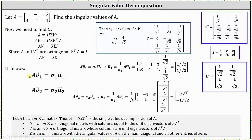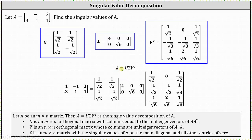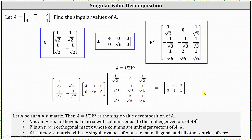You might ask why we use these formulas rather than find unit eigenvectors of A times A transpose directly. The reason is that for eigenvectors, there is also a unit vector in the opposite direction — using that would not give an accurate singular value decomposition. By using the formulas, we obtain the correct unit eigenvectors. To finish, A equals U times sigma times V transpose as written out here, which was verified using the Desmos matrix calculator — the product on the right equals matrix A.